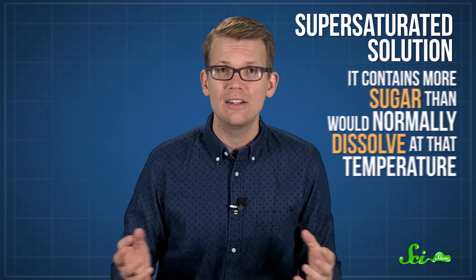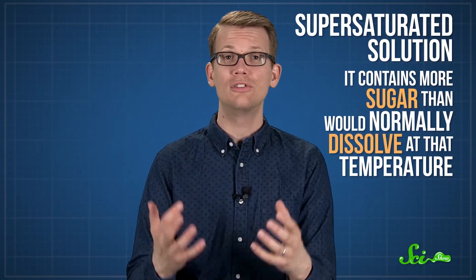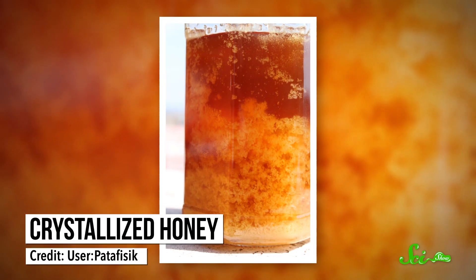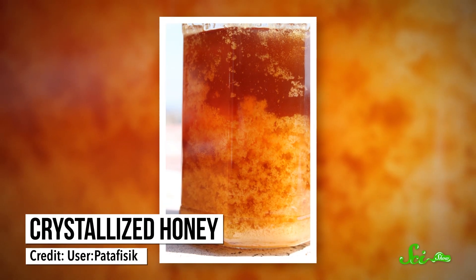Honey is technically a super-saturated solution, meaning it contains more sugar than would normally dissolve at that temperature. That's why it eventually gets all crystal-y in the pantry. Over time, the sugar comes out of the solution. Chemically speaking, it's desperate for water.